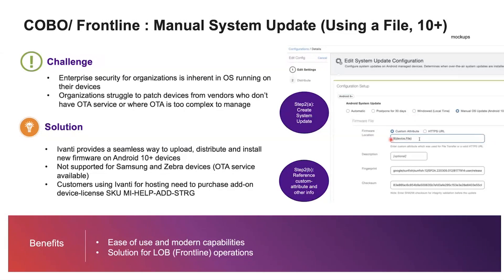Once the file is available, you create a system update configuration to act on that file. If you used file transfer, the file location is stored on the device and referenced via a custom attribute. If using your own HTTPS URL, you can point the system update configuration to that URL, provided no authentication is required. This works on Android 10+ devices that are non-Zebra and non-Samsung, since those vendors have their own OTA services.